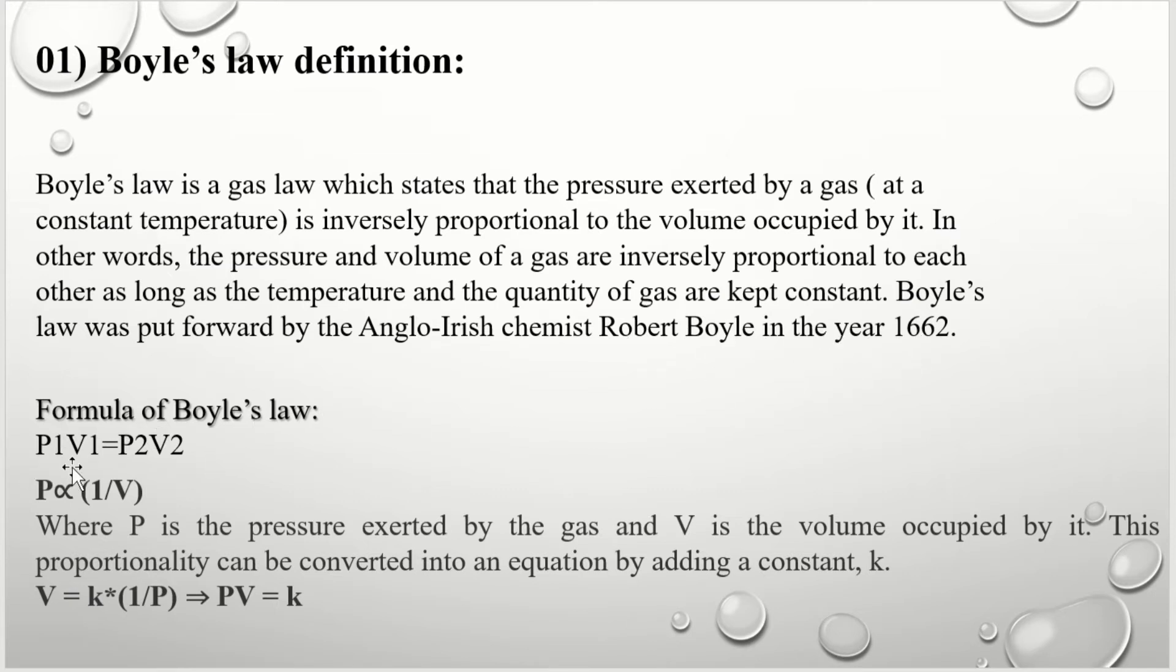Formula of Boyle's Law: P1V1 equal to P2V2, where P1V1 are the pressure and volume of gas at some temperature T1, and P2V2 are the pressure and volume of same gas at another temperature T2.